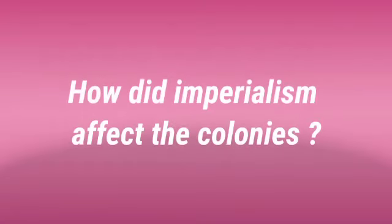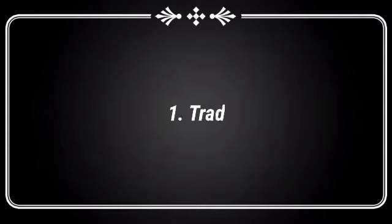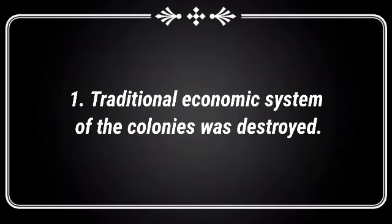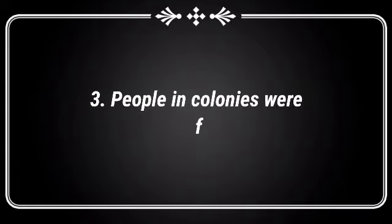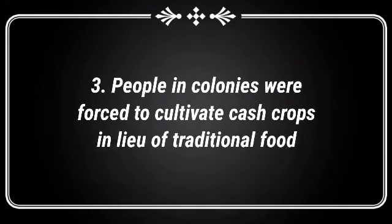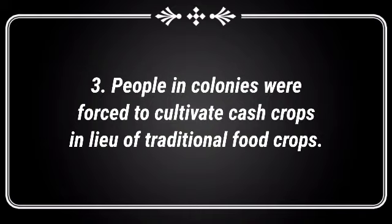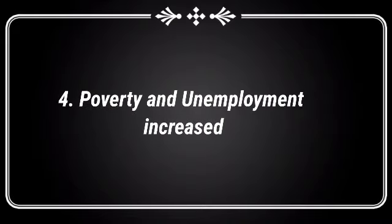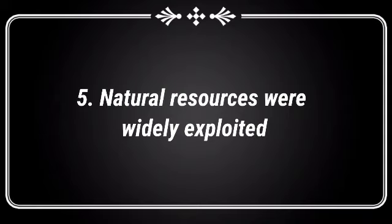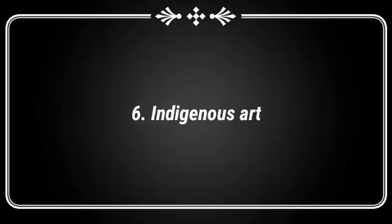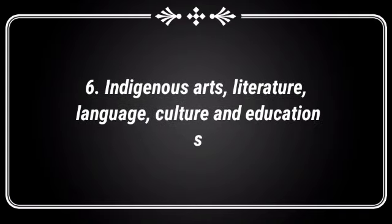How did imperialism affect the colonies? The traditional economic system of the colonies was destroyed. Administrative and judicial systems were replaced. People in colonies were forced to cultivate cash crops in lieu of traditional food crops. Natural resources were widely exploited. Indigenous science, literature, language, culture, and education systems were destroyed.